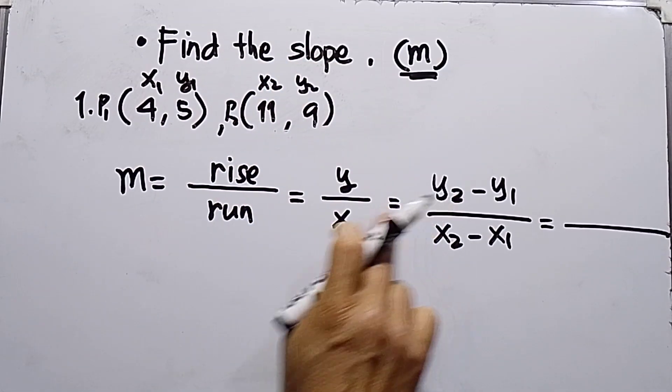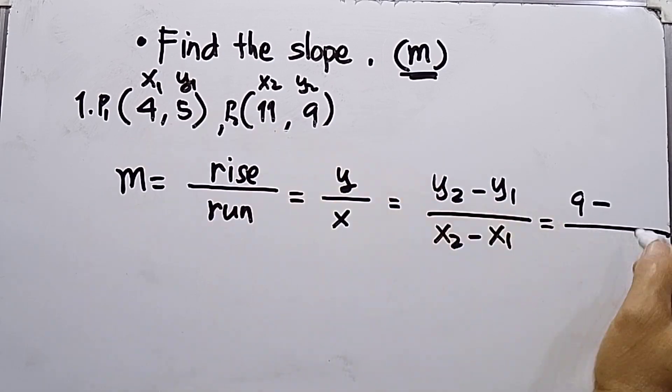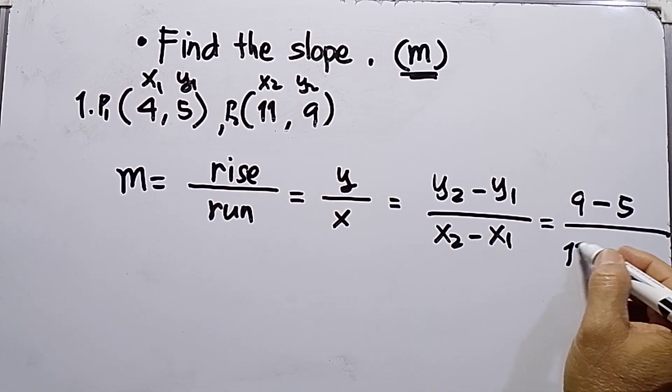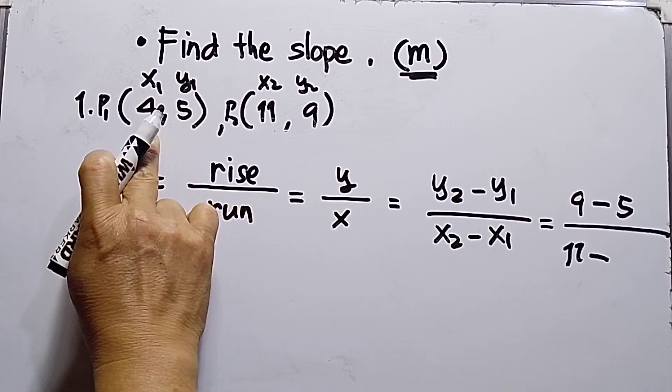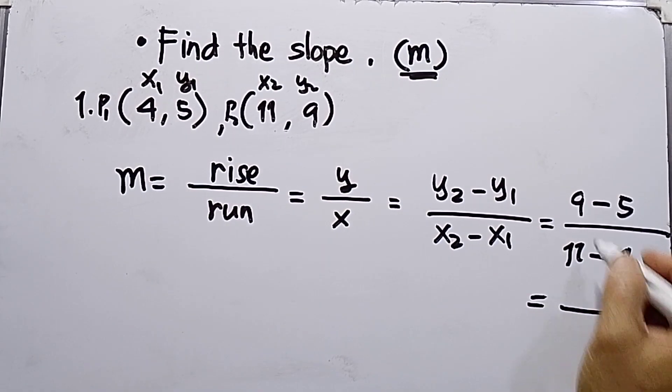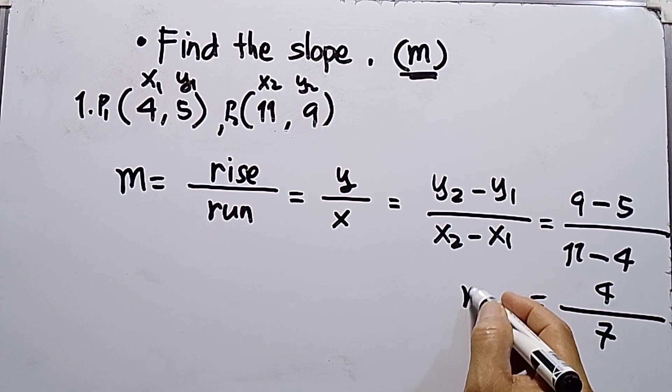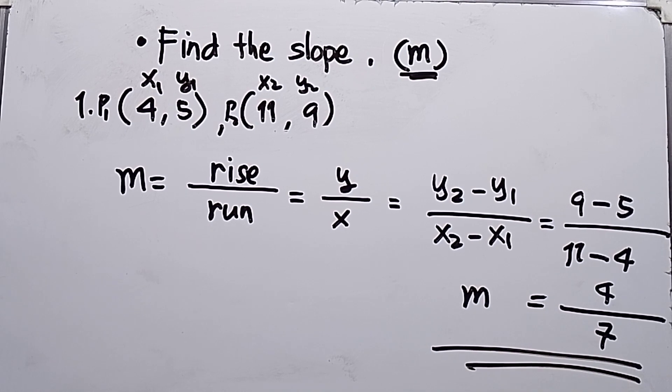So Y2 minus Y1, Y2 is 9 minus Y1 is 5. Next is X2, 11 minus 4. So 9 minus 5 equals 4. 11 minus 4 is 7. So the slope is equal to 4 over 7.